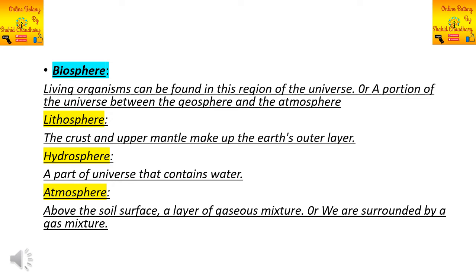The next level of organization is the biosphere. The biosphere is a portion of the universe where living organisms can be found — specifically the region between the geosphere and atmosphere. It includes three components: lithosphere, hydrosphere, and atmosphere. The lithosphere is the crust and upper mantle that make up Earth's outer layer. The hydrosphere is the part of the universe that contains water. The atmosphere is the mixture of gases above the soil surface that surrounds Earth.